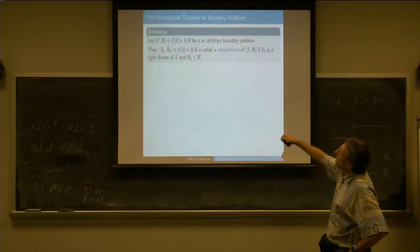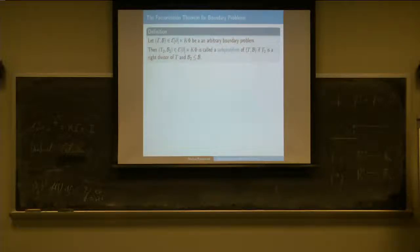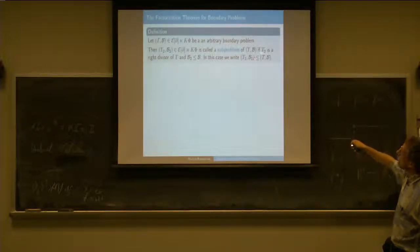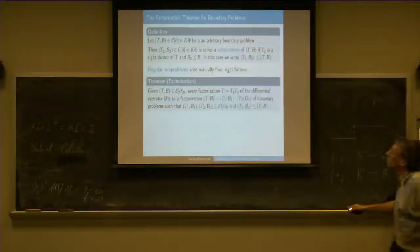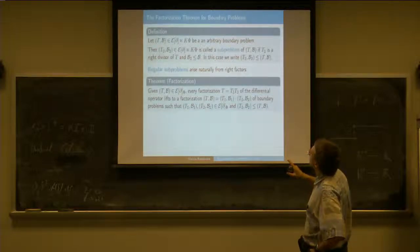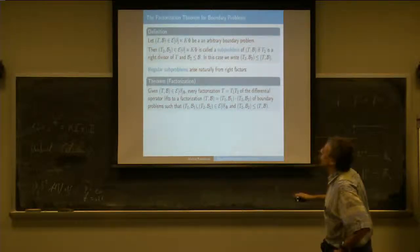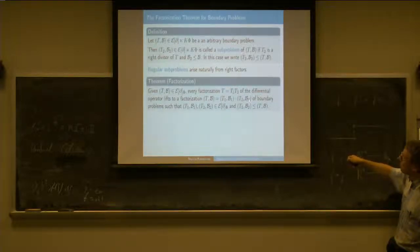At the same time I'm taking a right factor of the big boundary problem. So that's what the subproblem is—I write this as: T2B2 is a subproblem of TB. Regular subproblems will automatically come from right factors, and this is the factorization theorem: you can always lift a factorization of the differential operator to a factorization of boundary problems in such a way that the right factor is a regular subproblem.